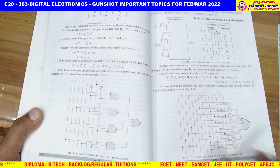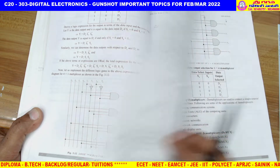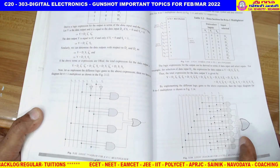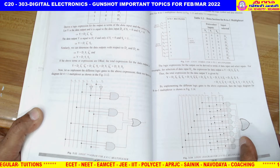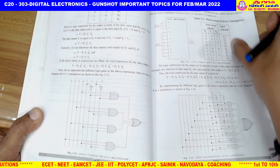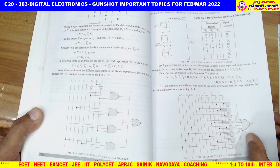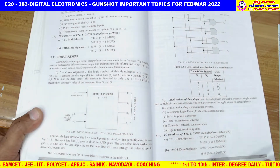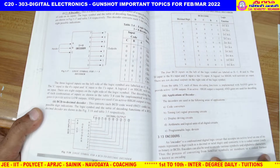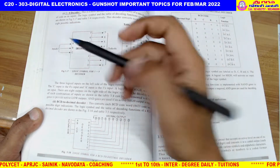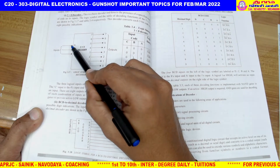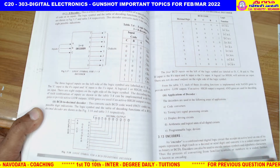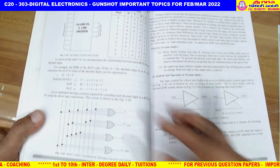MUX (Multiplexer) and DEMUX (Demultiplexer) are very important. First, build the block diagram and then demonstrate the circuit diagram. Also study demultiplexers and decoders — specifically a 3-to-8 decoder with 3 inputs and 8 outputs.